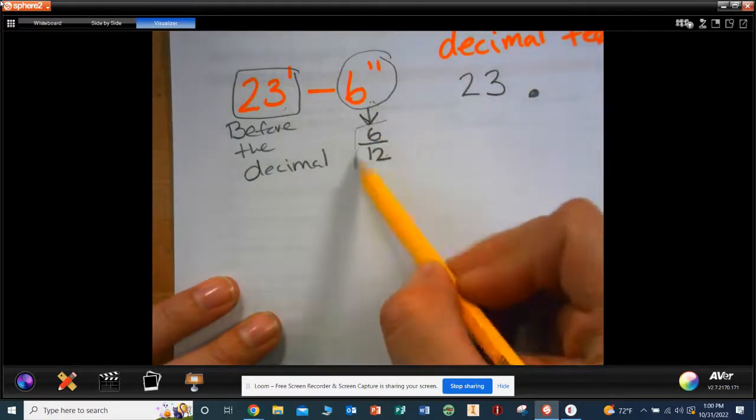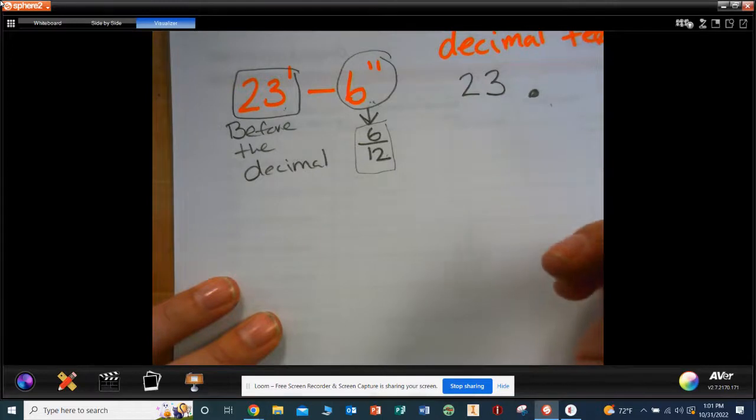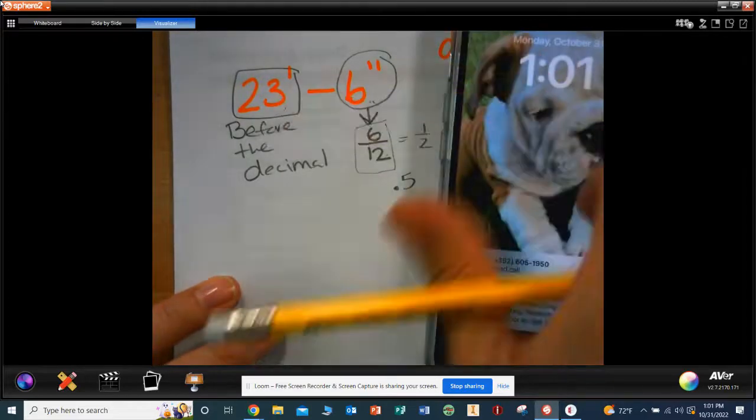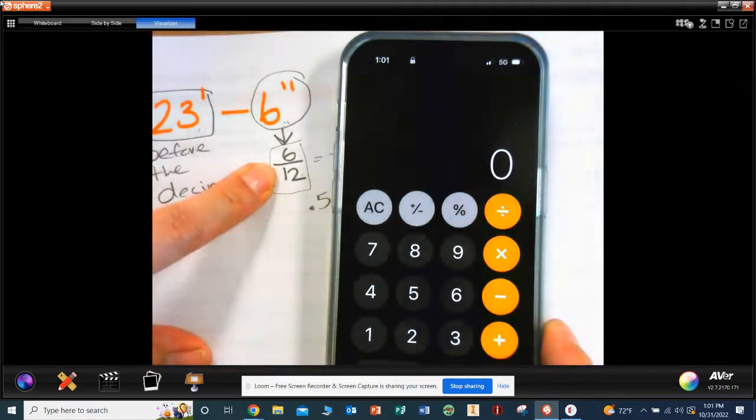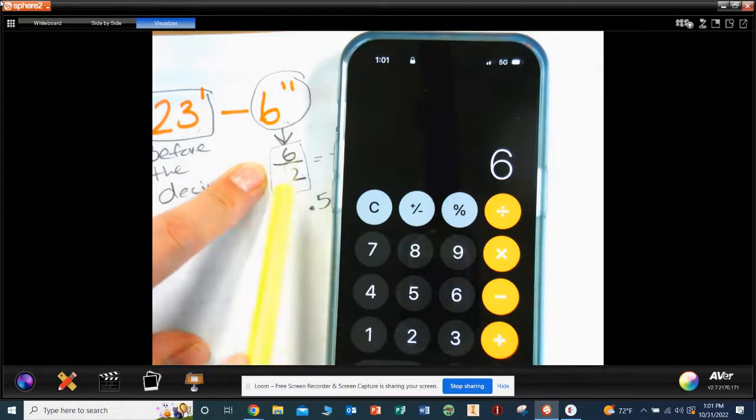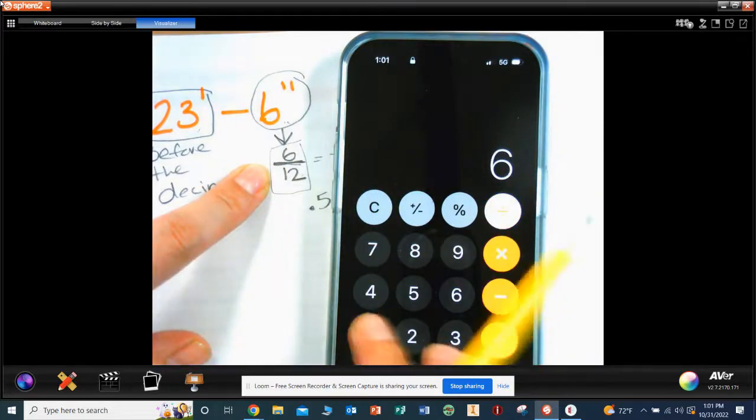So we have to convert this into a decimal. Yeah, because this is one half. So what is the decimal? 0.5. Now if you don't know, what you do is you take your calculator. What if I wanted to convert this into a decimal? What do I type in first? The top number, 6. And what do I do with 6?